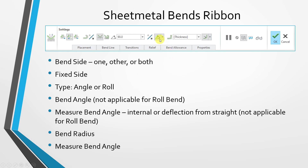For example, if you have a 90-degree bend, that's the same whether you're measuring the internal angle or deflection from straight. But if your deflection from straight was 45 degrees, then your internal bend angle would be 135 degrees.